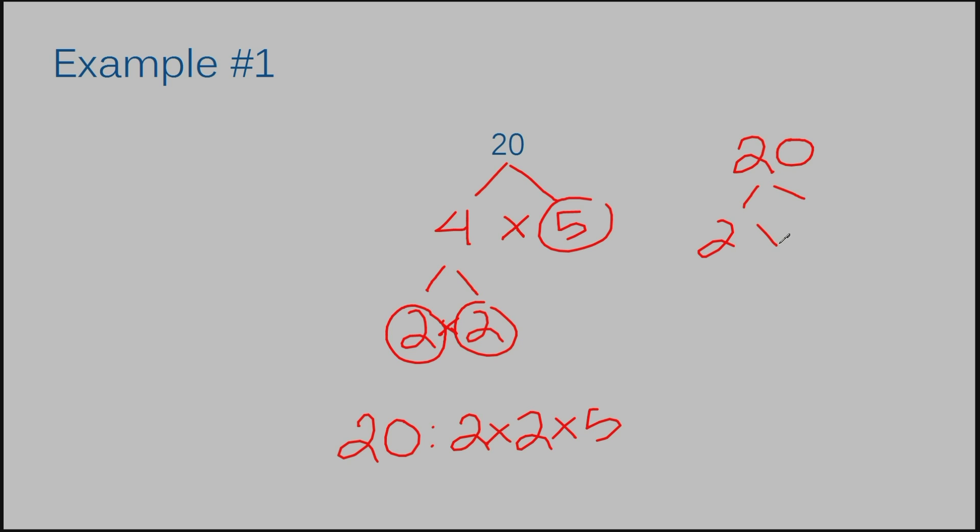We have 2 and we multiply that by 10. That would give us 20. This would be 2 times 5. Remember once we get to prime numbers, I like to circle them. So this 2 is prime. I can't break it down anymore. So obviously this 2 is prime and then a 5.